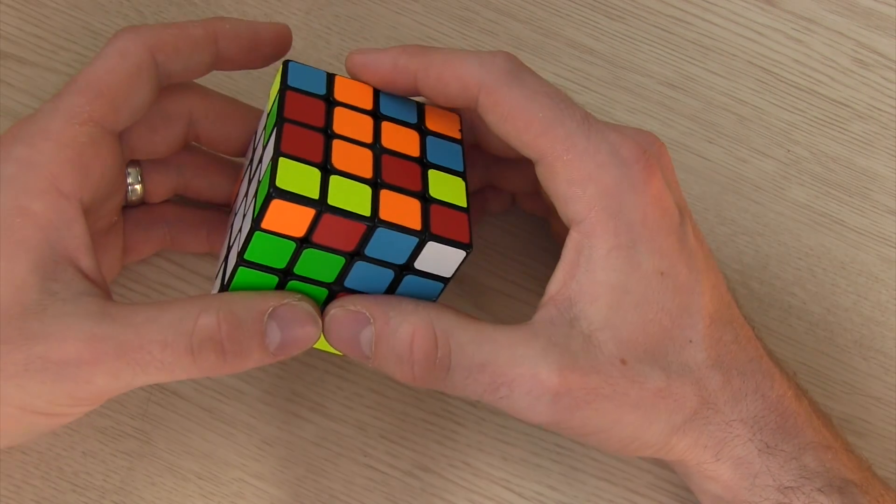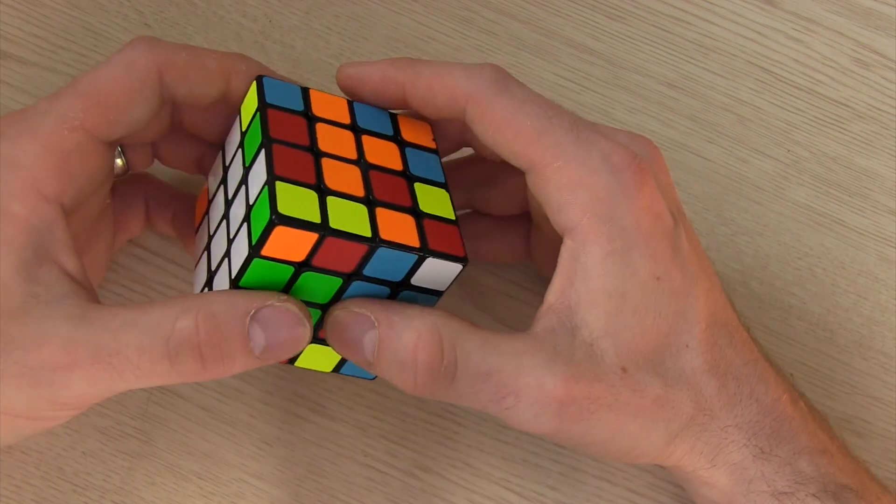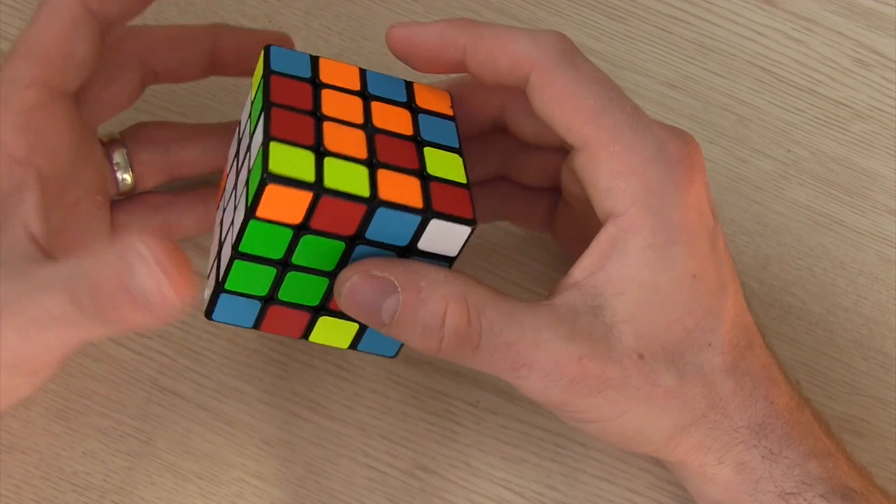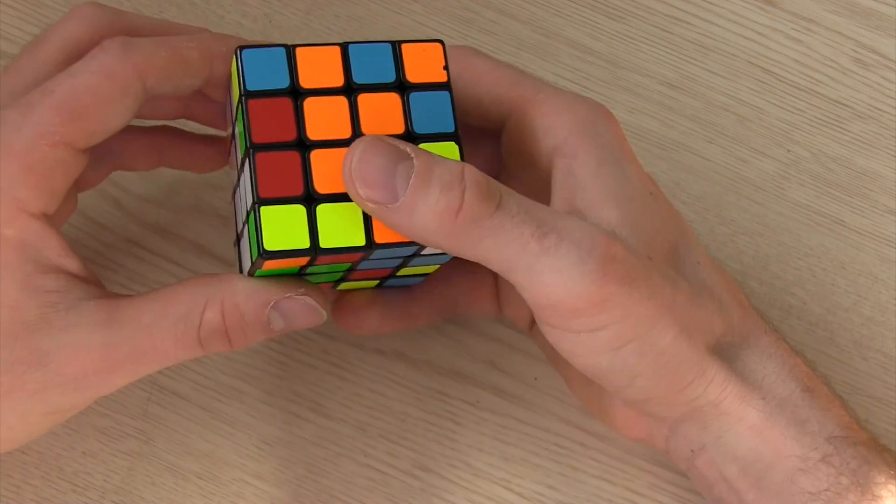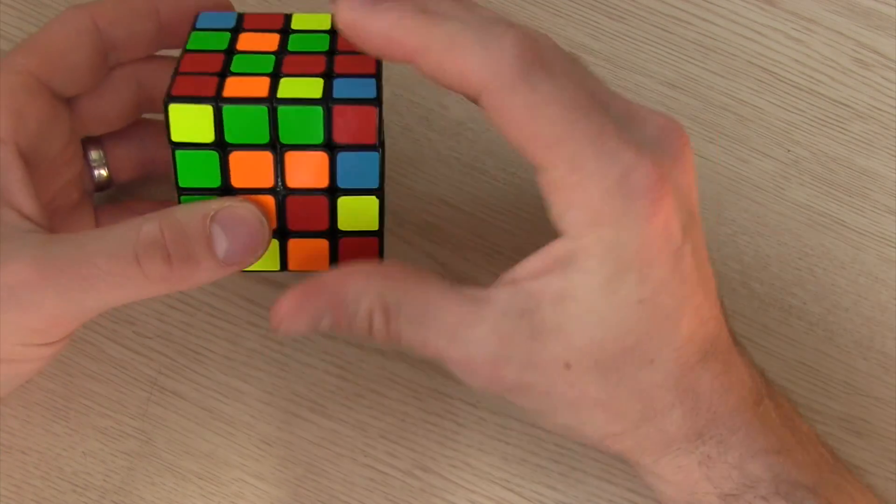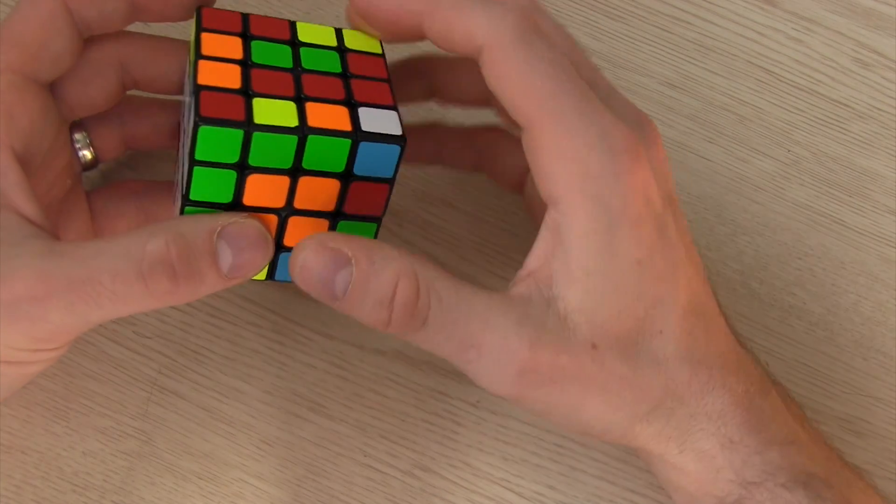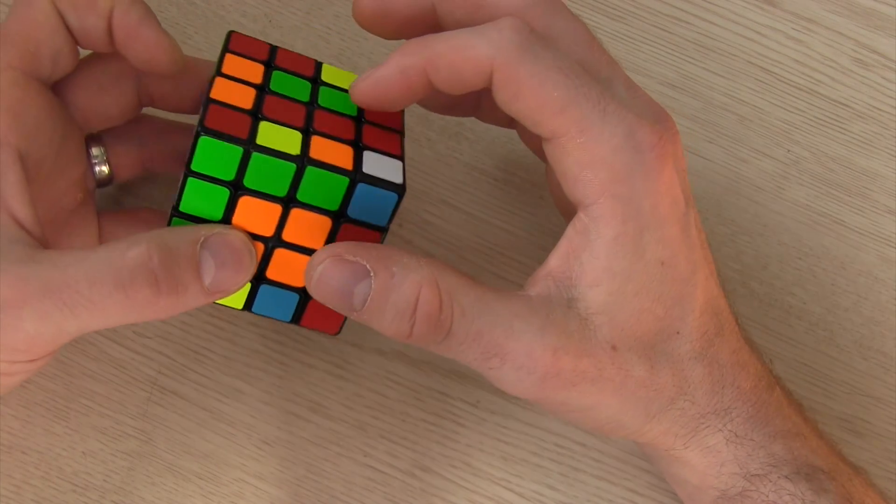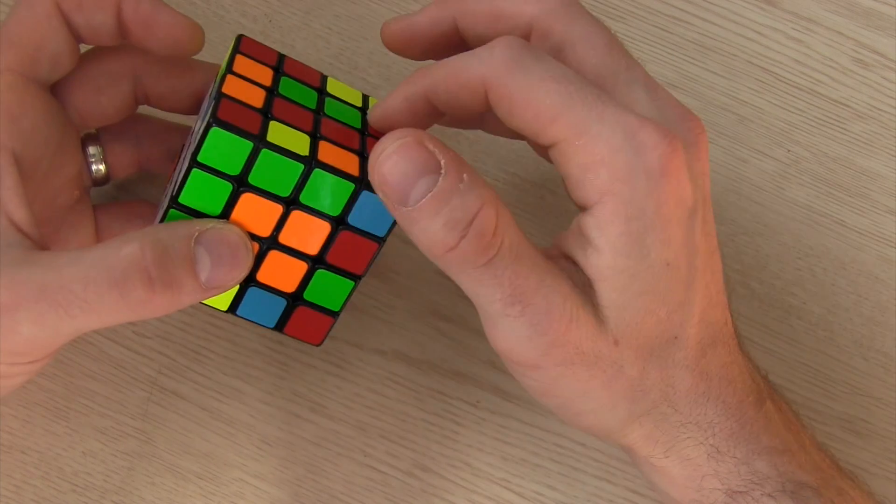Now this takes some time to do and there are so many times when I first started that I would mess up these edges but it gets easier with time. So to pair up that final orange center I'm going to set it up like this and as you saw I only moved these three layers and the top.